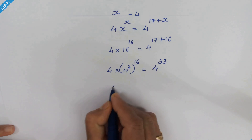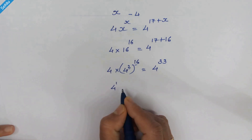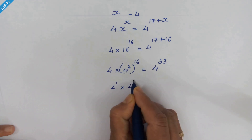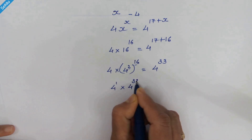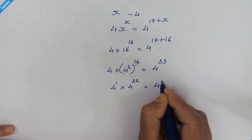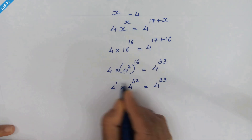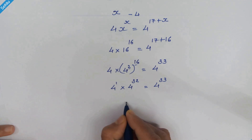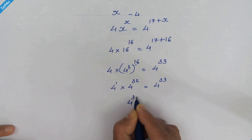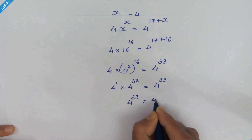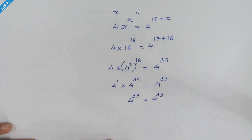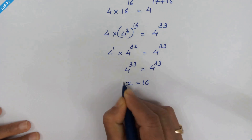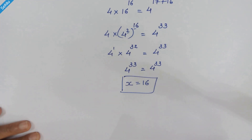This 2 can multiply the exponent, and 4 has 1 as an exponent, so it becomes 4 raised to 1 times 4 raised to 32, equal to 4 raised to 33. Since it's the same base we can add the exponents, giving 4 raised to 33 is equal to 4 raised to 33. So x equal to 16 is the correct answer.